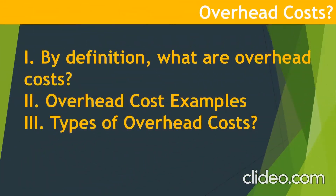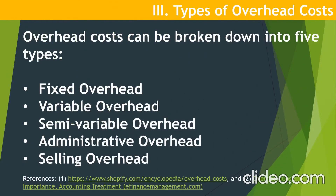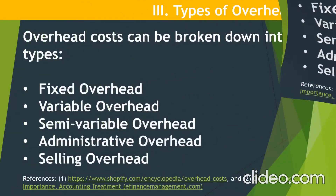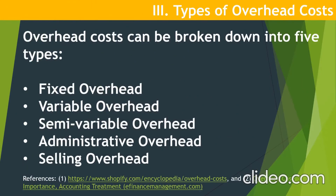Now let's move on to the types of overhead costs. We have fixed overhead, variable overhead, semi-variable overhead, administrative overhead, and selling overhead. These are the five types of overhead costs and we are going to define them one by one.